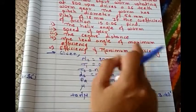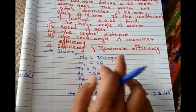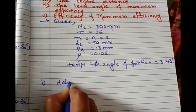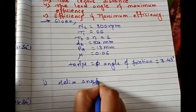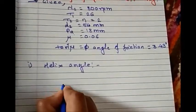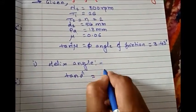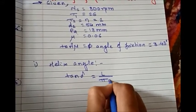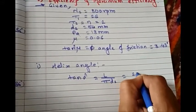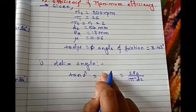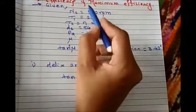Let's start from helix angle. We know the formula for lead angle: tan of delta equals L divided by pi d2, which is 2 PA divided by pi d2 because L is nothing but n PA. Since n is 2, it is 2 PA divided by pi d2.